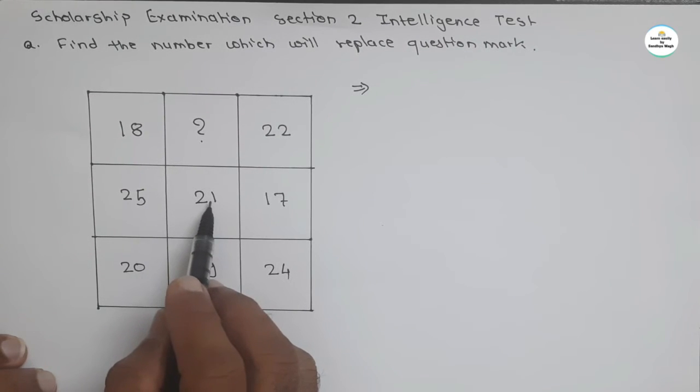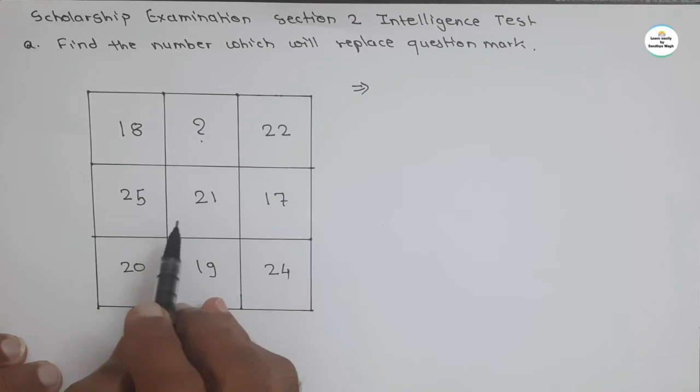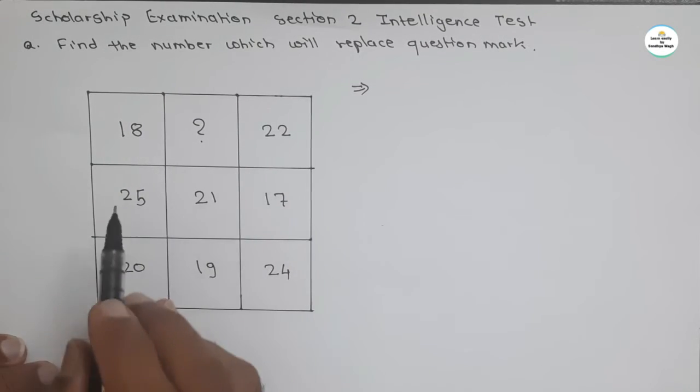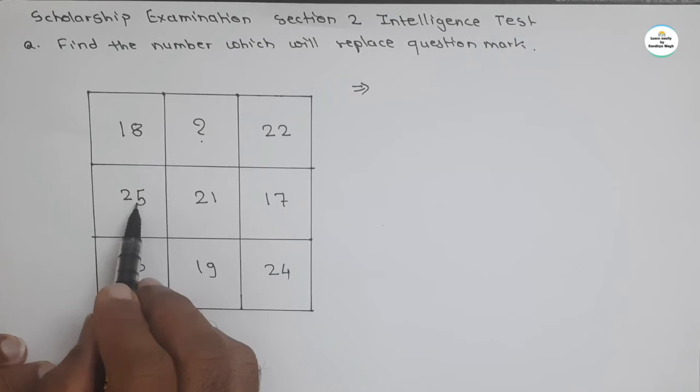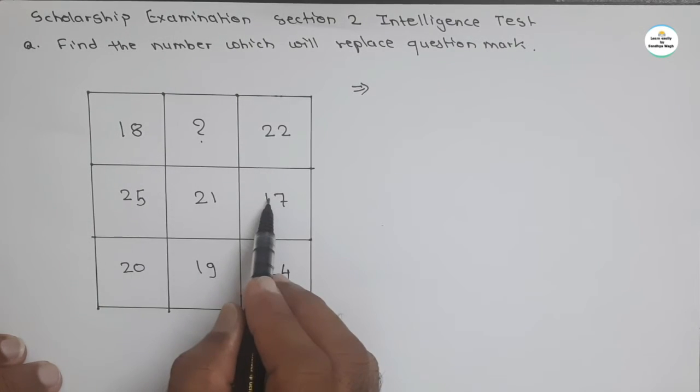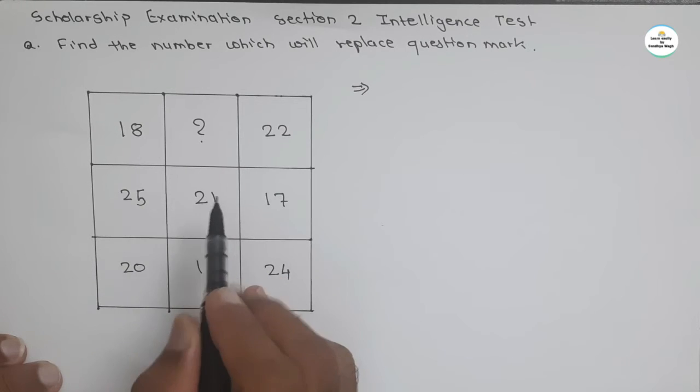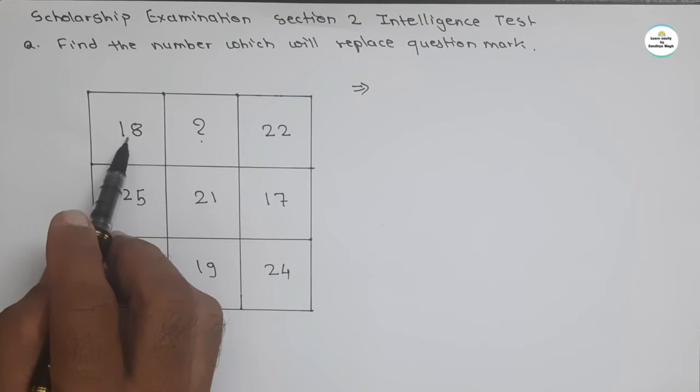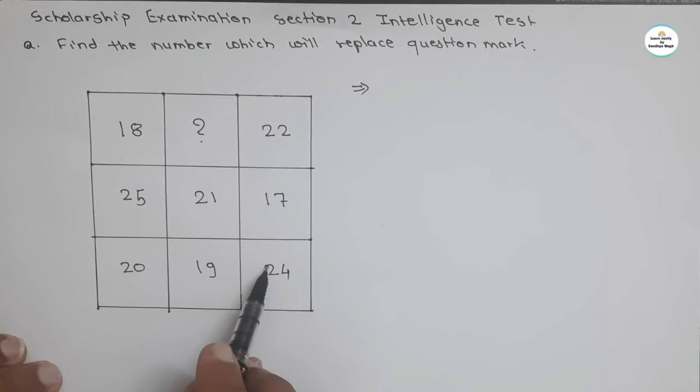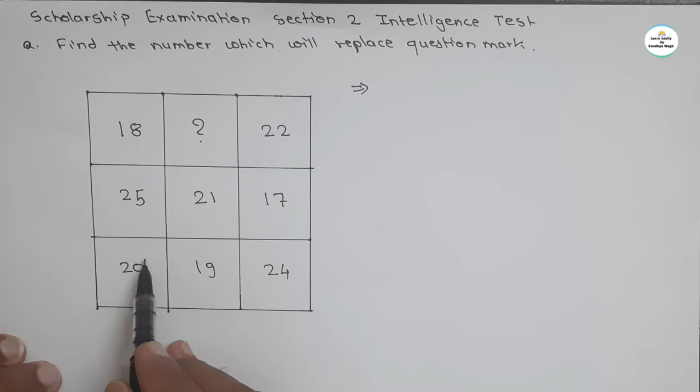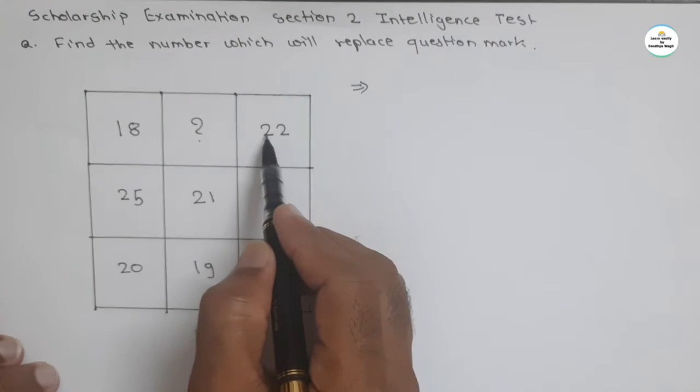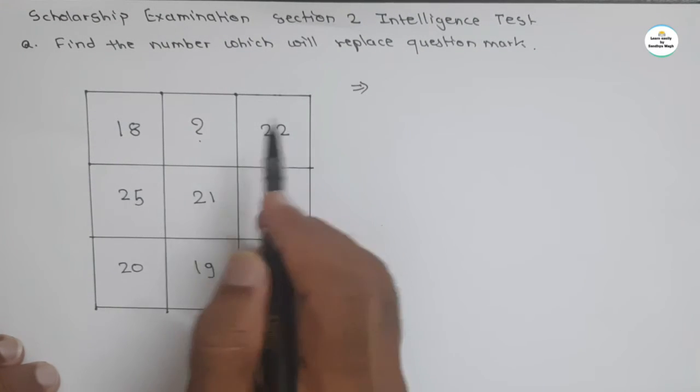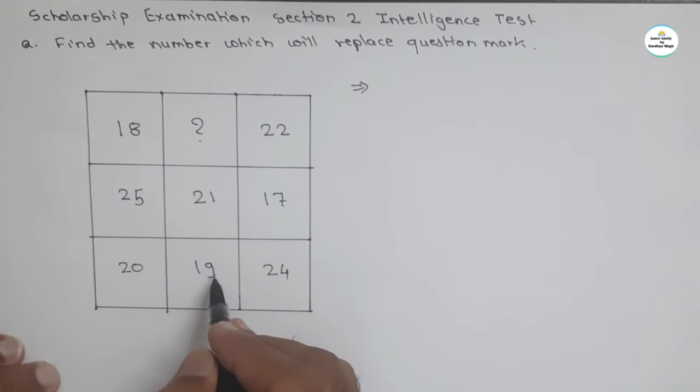See the central number 21. And consider the opposite numbers. This is 21. This is 25, means plus 4. And here minus 4. Similarly if we see this number that will be minus 3. And plus 3. And here minus 1, there will be plus 1. Similarly this relation will apply for this one also.